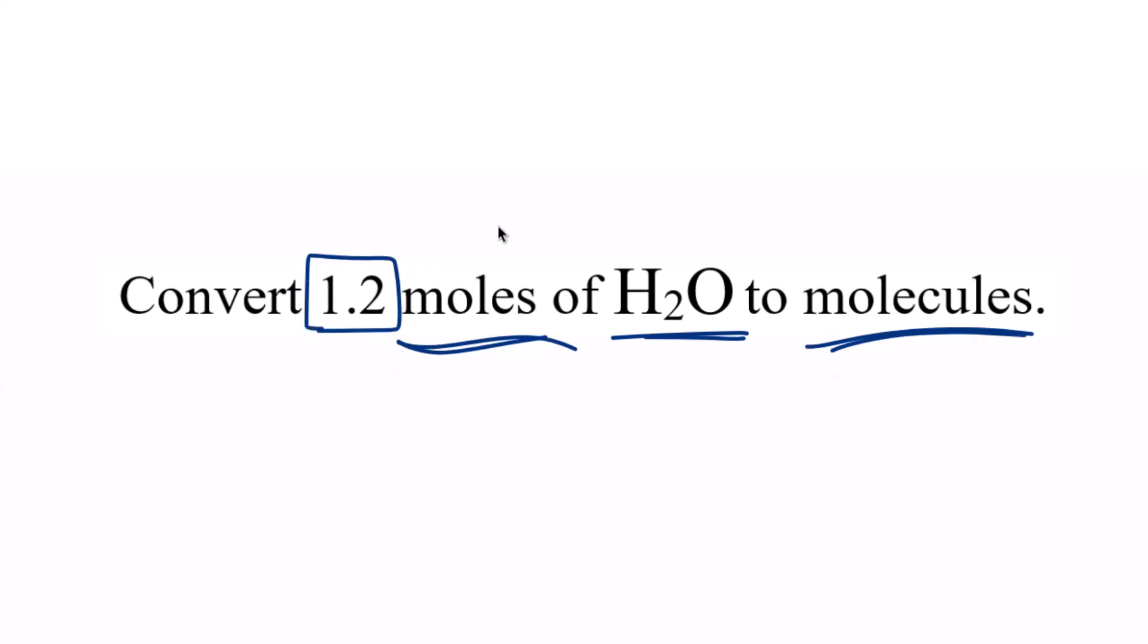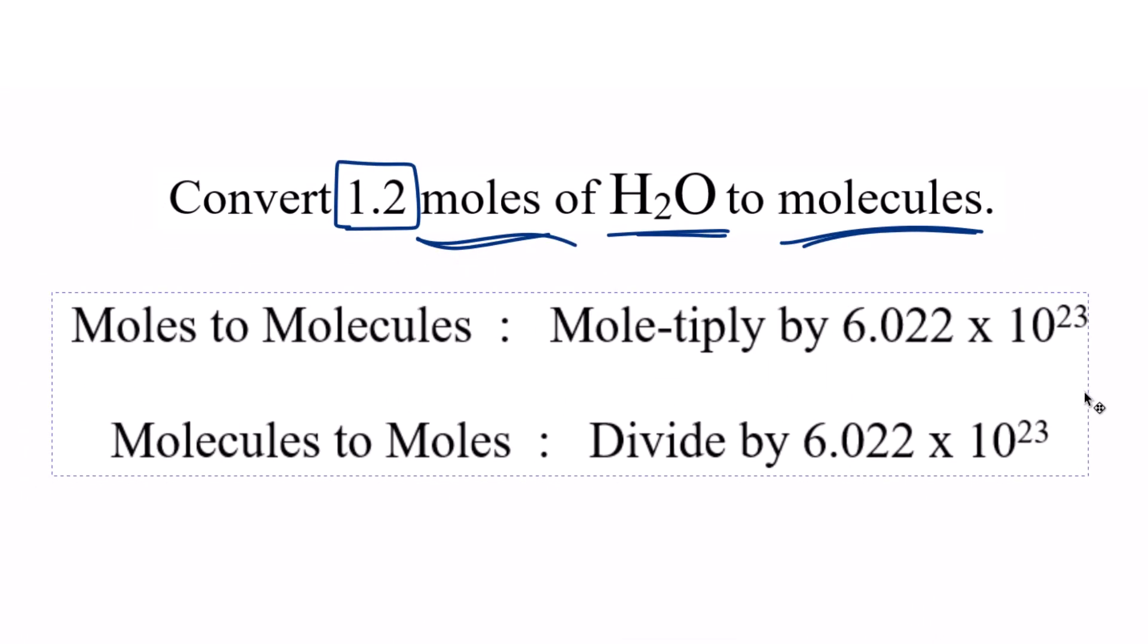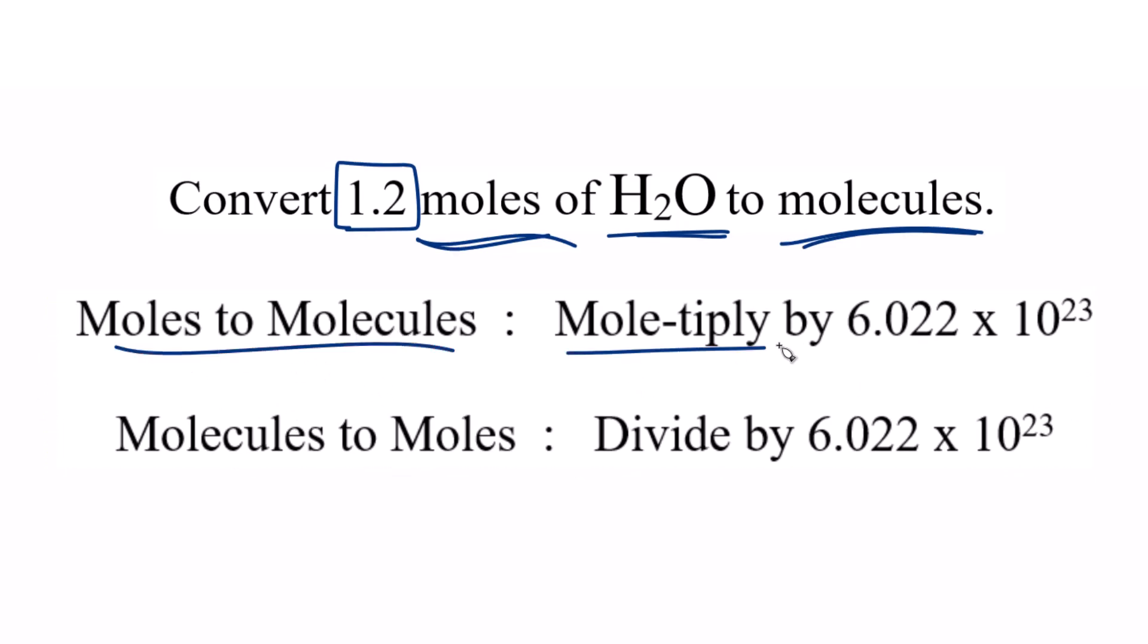So when we're converting from moles to molecules, it doesn't matter if it's water or another compound. This general mnemonic here is really helpful. When you go from moles to molecules, you're going to multiply by Avogadro's number, 6.02 times 10 to the 23rd. If you're going the opposite direction, molecules to moles, you divide by Avogadro's number.